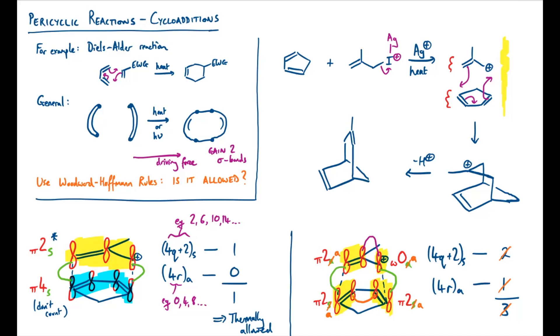If we look at the pi-2 systems, the things that contribute to the 4q plus 2s bit, we don't actually have any suprafacial ones of those - we've only got antarafacial, so we put a zero here. We still have our omega zero A, so that didn't change. Our total ends up being one, that is odd, and therefore it's thermally allowed. The same conclusion happens regardless of what we do here - it's what happens when maths interacts with organic chemistry.